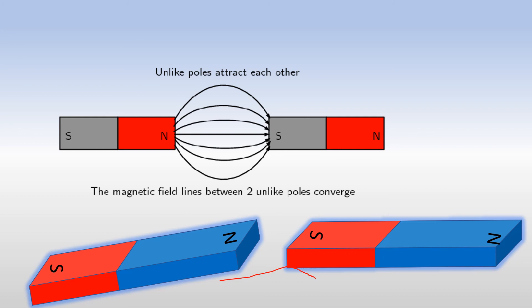So the magnetic field lines between two unlike poles will always converge. Now here it's very clear that when two unlike poles of the magnets are brought closer, the magnetic field lines converge.